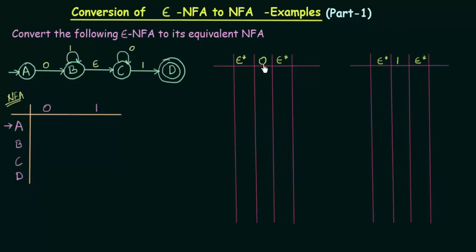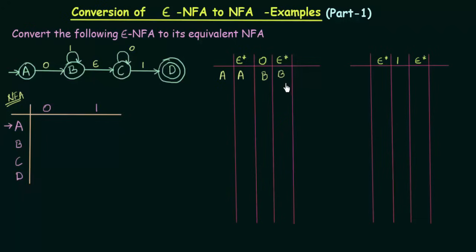We have to find the Epsilon closure, then apply the input symbol, then find the Epsilon closure again for each state. Let's start with state A on input 0. The Epsilon closure of A is A itself. A on 0 goes to B, and the Epsilon closure of B is B and C. So A on input 0 will go to states B and C.